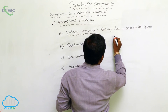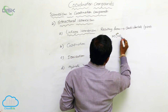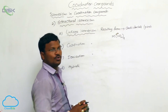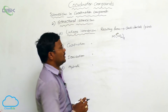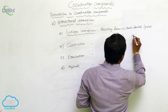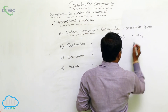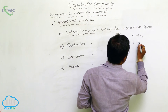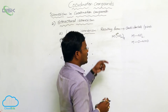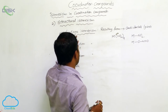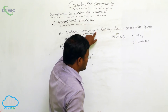To explain linkage isomerism, consider MNO2 complexes. Here, NO2 is the nitro compound. In this compound, the metal may react with the nitrogen atom of the ligand, or sometimes the metal may also react with the oxygen atom of the same ligand. The resulting isomers are called linkage isomers, and the phenomenon is called linkage isomerism.